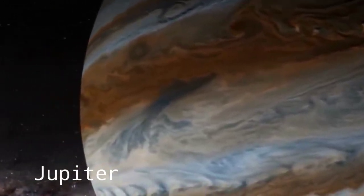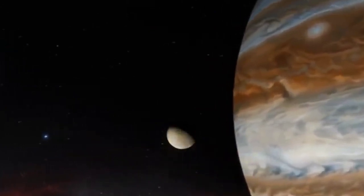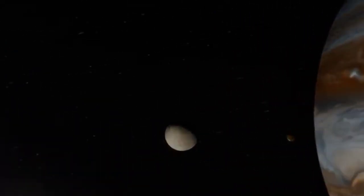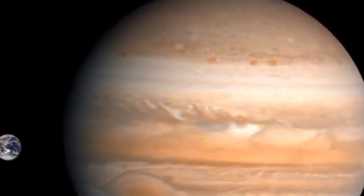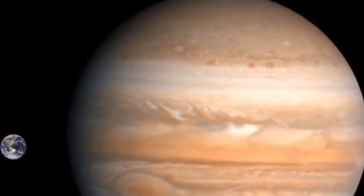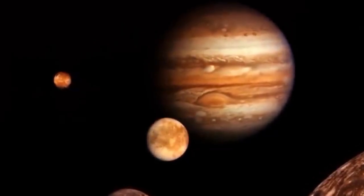Jupiter comes next. It is the largest planet of the solar system and called the gas giant. It is so huge that it contains three times the mass of the rest planets all together. Jupiter has at least 67 moons.